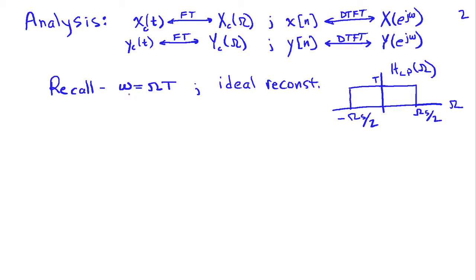Key facts we've established previously: discrete-time frequency lowercase ω equals continuous-time frequency Ω times the sampling interval T. Also, the ideal reconstruction process involves multiplying by an analog low-pass filter with gain T in the passband, which stretches from −ωs/2 to ωs/2.